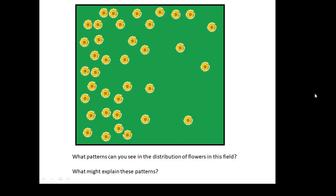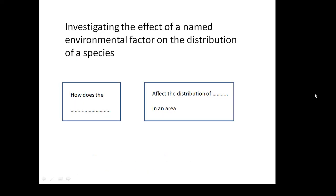Maybe that's something to do with the amount of light, the amount of shading, or maybe it's near a stream? I don't know. So, investigating the effect of a named environmental factor on the distribution of a species. That's what it says in the specification. How does the something affect the distribution of something in an area? How does the availability of water or the rainfall affect the distribution of daisies in a particular area?